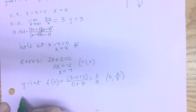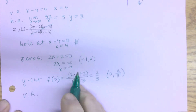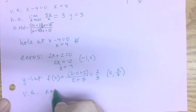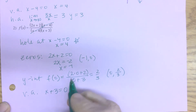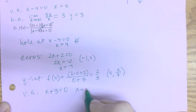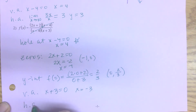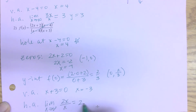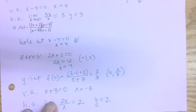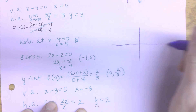Then I'll find my vertical asymptote by setting the denominator equal to zero. The only factor left is x + 3, so that gives a vertical asymptote at x = -3. My horizontal asymptote is found by taking the limit as x approaches infinity using the lead terms: 2x / x = 2. So I graph that as y = 2.